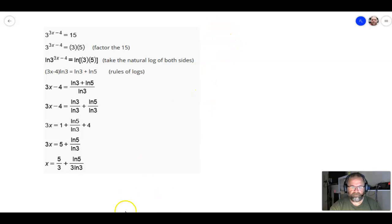But if I were doing this problem, I would just do it like this. So, I would start off with the 3 to the 3x minus 4 is equal to 15. And then once I get my base by itself with just the exponent on one side and then the value on the other side, that's when I'm going to apply the natural log.